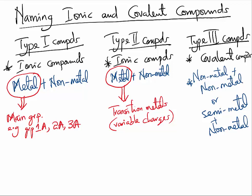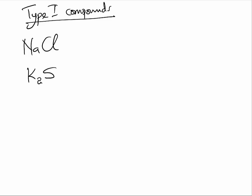Let us begin with Type 1 compounds. How do we name Type 1 compounds? Let us take a look at some examples: NaCl, K2S, Al2O3.